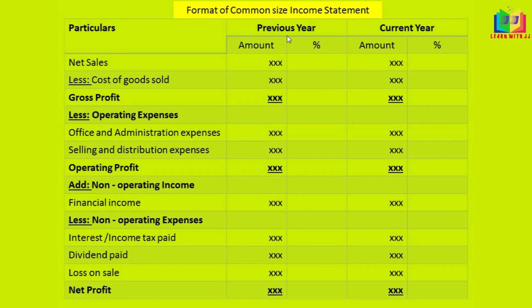This is a common-size income statement. We have columns for the previous year and the current year, showing figures side by side for comparison.